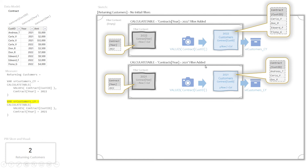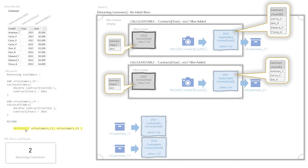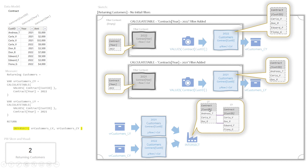After all that, we've got two variables — VR_customers_CY and VR_customers_LY — that respectively hold our temp tables of current year's customers and last year's customers. Now we're going to use our RETURN statement to say: we've defined all the variables we need, let's return our final answer. We're going to take the temp tables in both variables and put them into the INTERSECT function. The INTERSECT function accepts two temp tables, compares the values in them, and gives you the intersection — the common values or the overlap values.